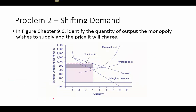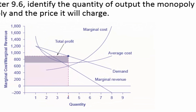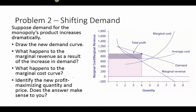On to problem 2: we consider figure 9.6 from Chapter 9 and identify the quantity of output the monopoly wishes to supply and the price it will charge. From the figure, the quantity they produce is 4 units of output, and the price they charge is right about $900.